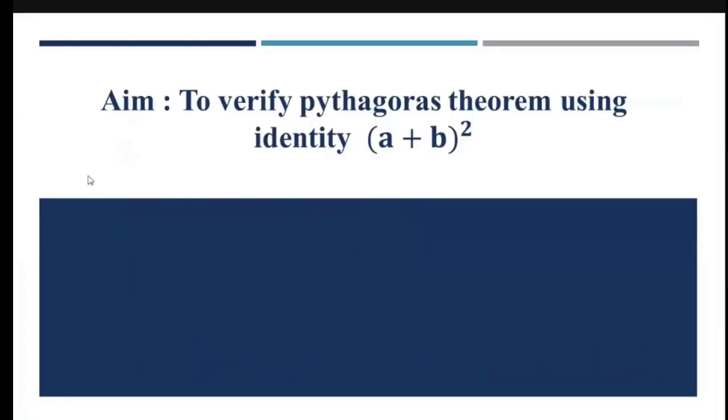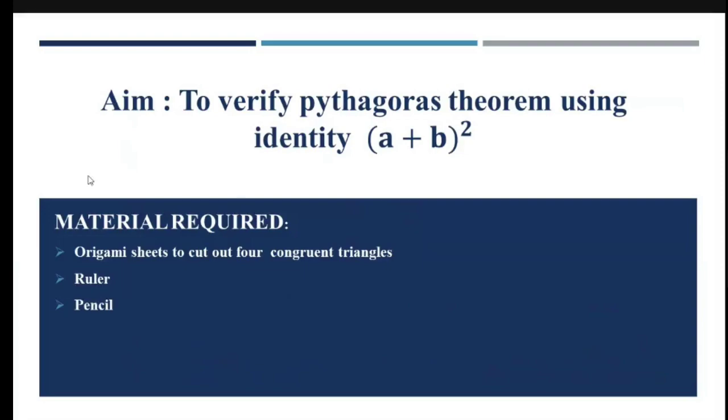The aim is to verify the Pythagoras theorem using the identity (A + B)². The material required is origami sheets for the cutout of four congruent right triangles, ruler, pencil, eraser and adhesive.